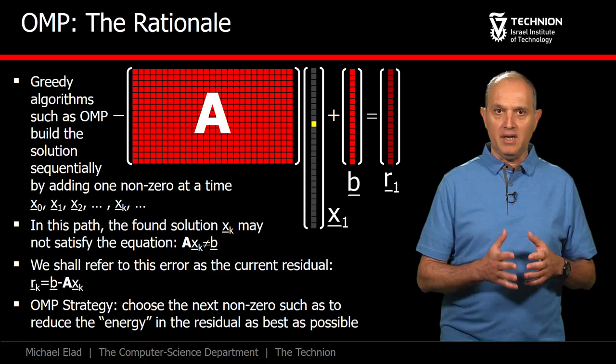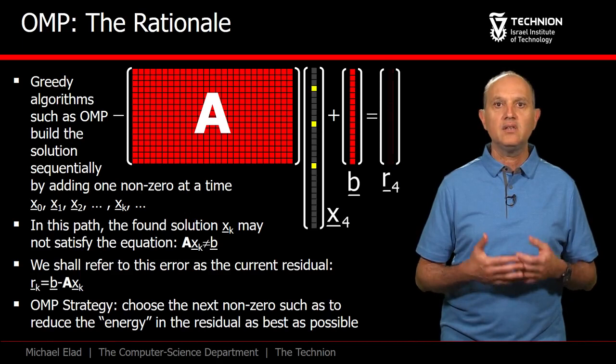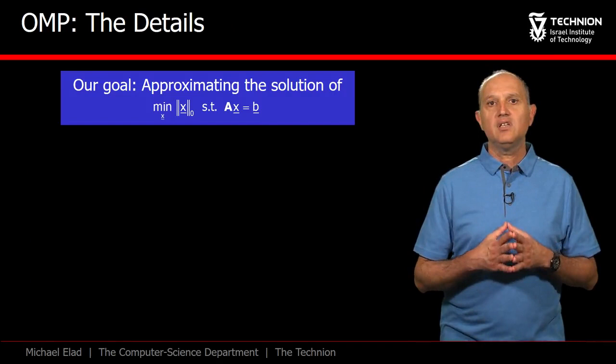Since we start with x0 being 0, the residual starts as the vector B. We update x by adding 1 non-zero, becoming x1. The energy of R1 gets smaller. We proceed this way, adding 1 non-zero at a time to the solution and reducing the energy of the residual until it becomes 0 or sufficiently small.